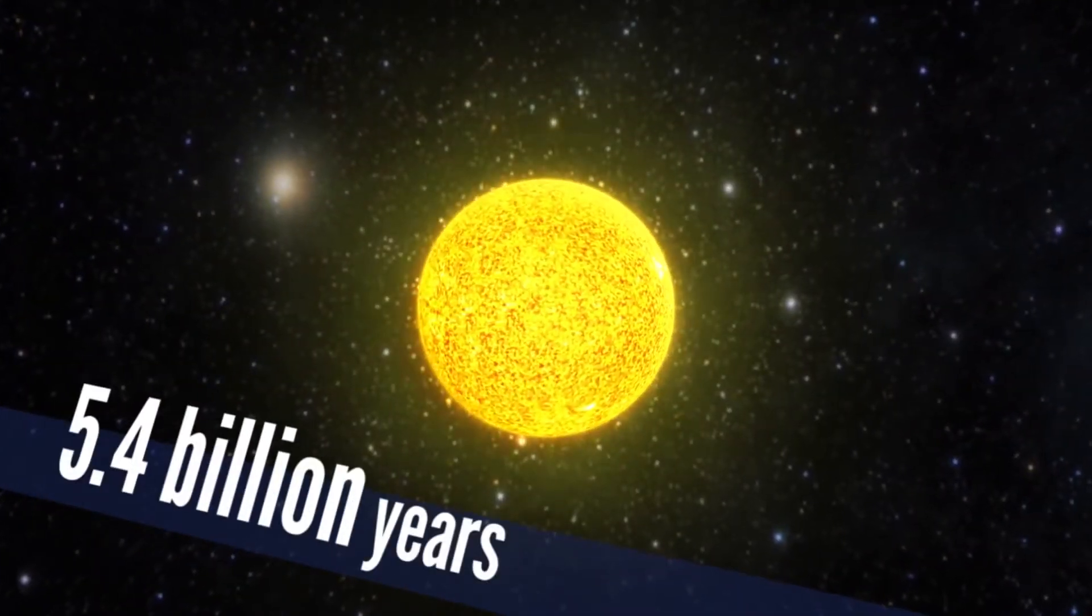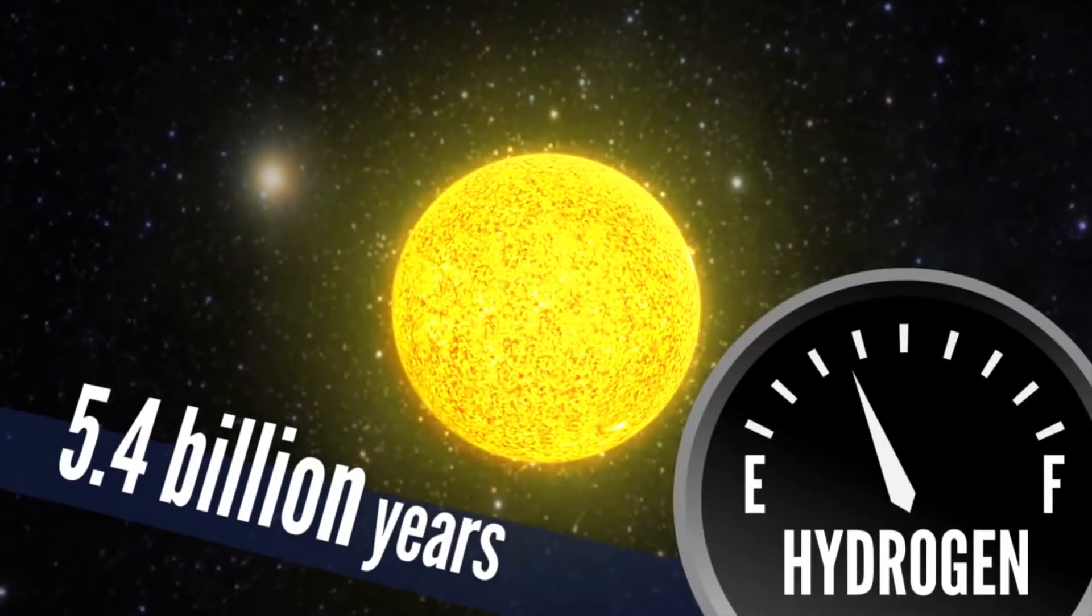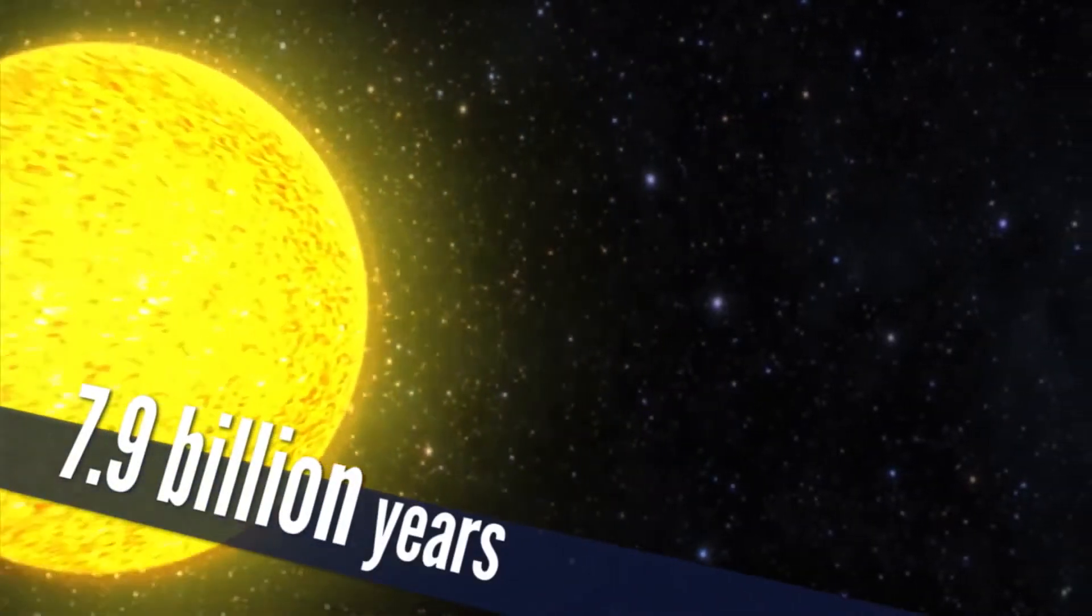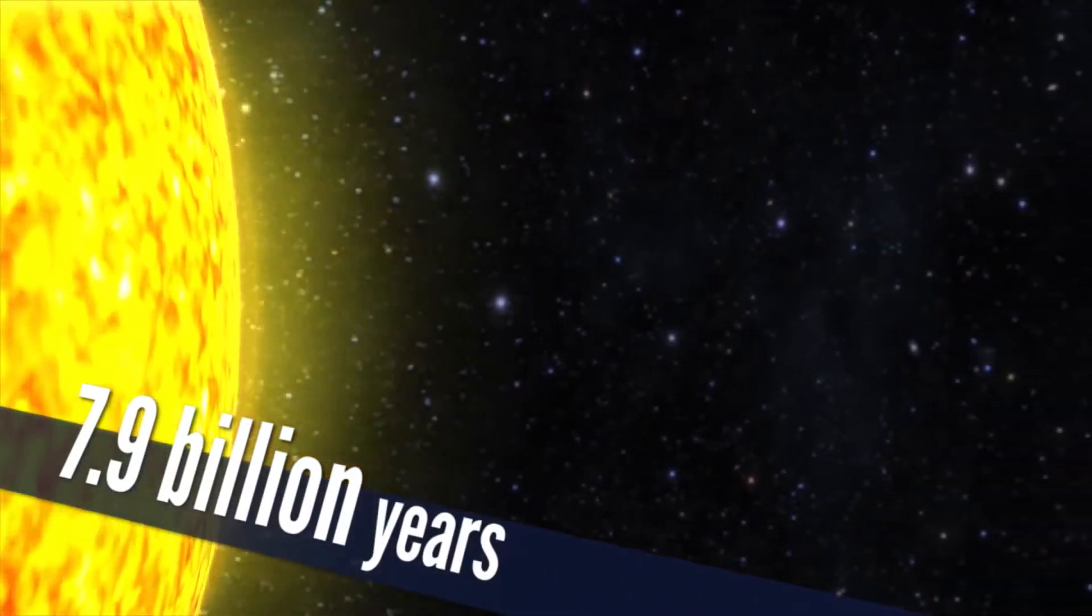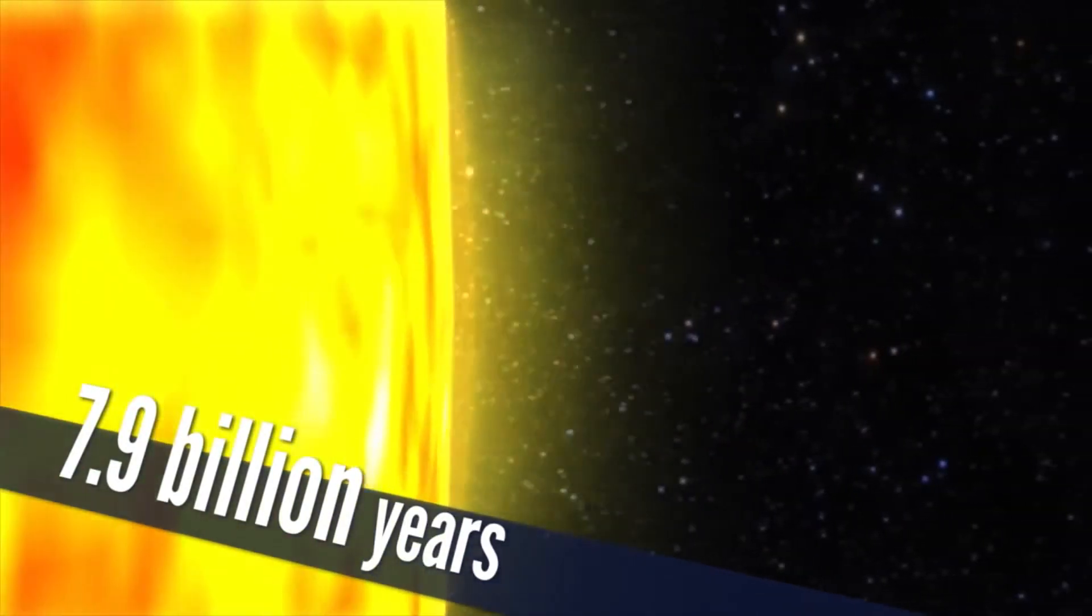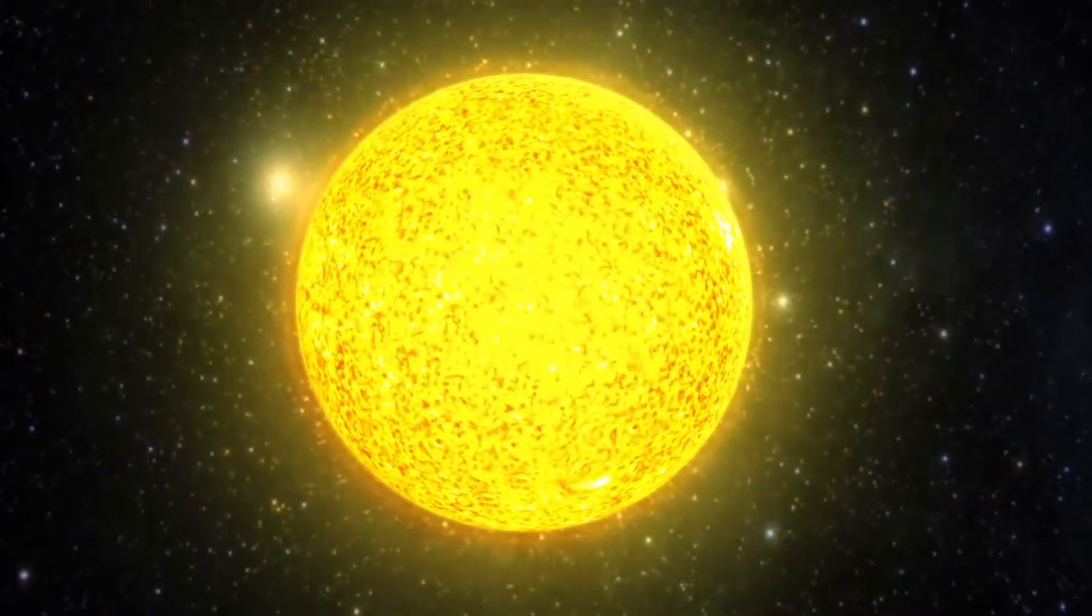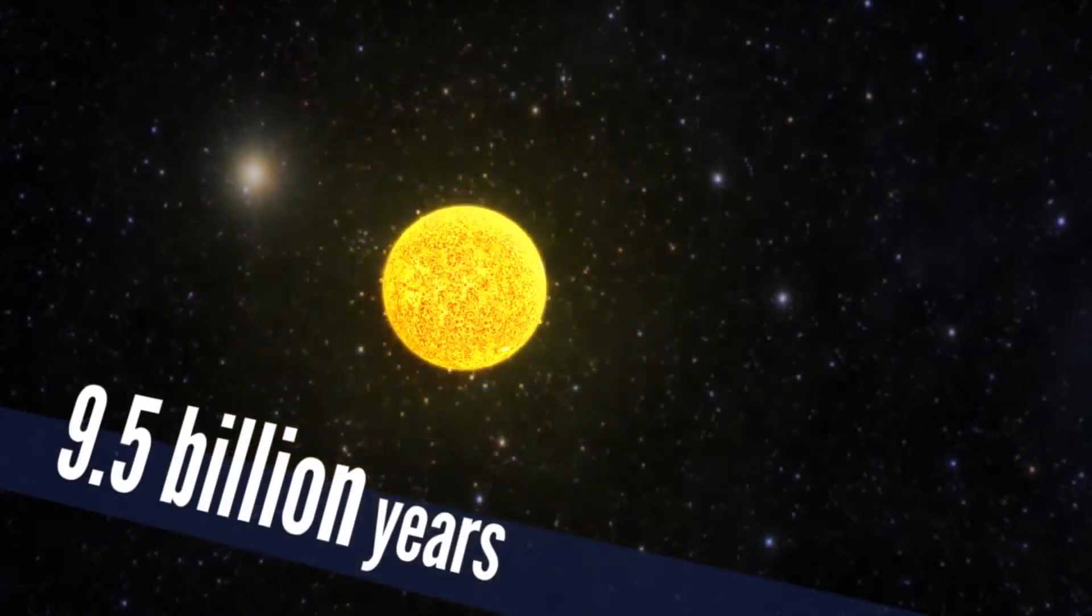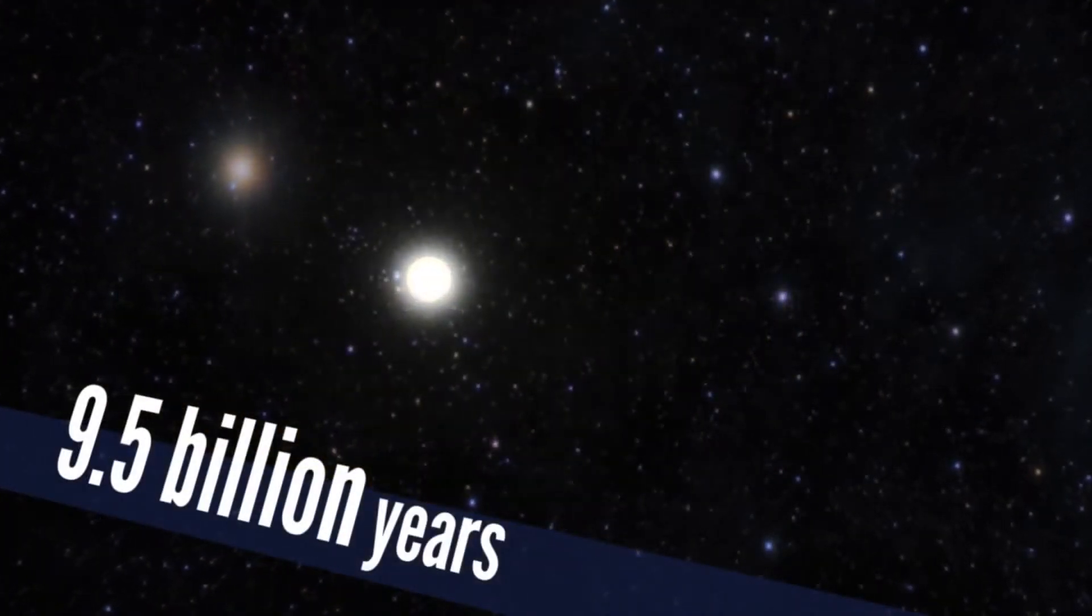Assuming our star makes it out in one piece, by this time, it starts to run out of gas. By 7.9 billion years, our sun swells up more than 250 times wider than it is today. Mercury and Venus are toast. That planet-eating balloon deflates 9.5 billion years down the line, leaving a white dwarf in its place.